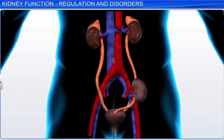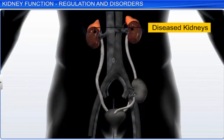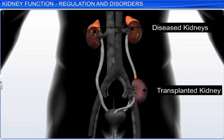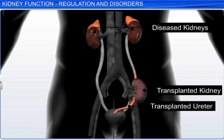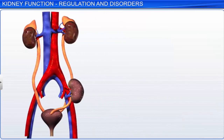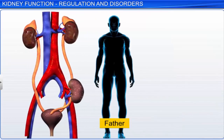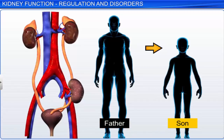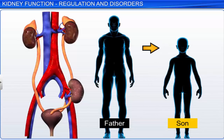However, in cases of acute renal or kidney failure, the only option is kidney transplantation. In this process, a functioning kidney from a donor is transplanted in the patient. Usually, a close relative of the patient is the preferred donor, to minimize the chances of the patient's immune system rejecting the kidney.